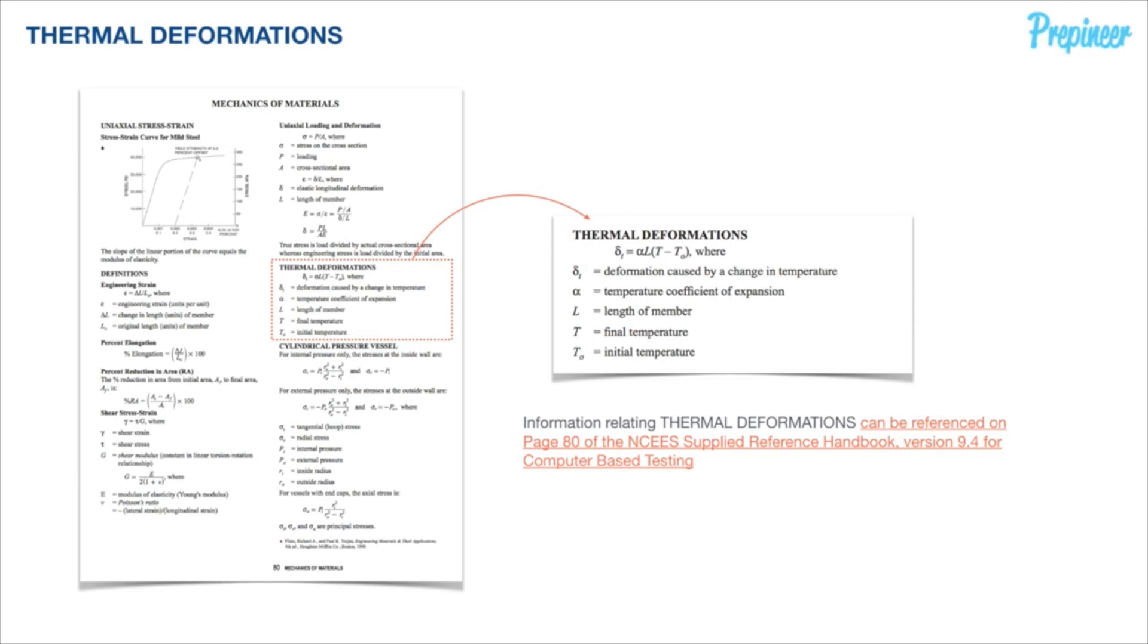then we are able to determine how much that member will deform or change in length, that's delta, by taking all the data alongside the specific temperature coefficient of expansion or also called the coefficient of thermal expansion as it is defined in the given tables in our reference handbook.